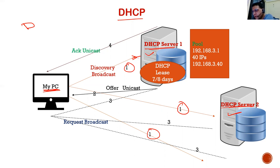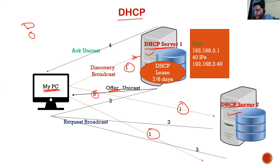The nearest server will respond with the second packet — this is the Offer. It is a unicast message coming directly from that server. It could also happen that I receive an offer from the second server as well. To avoid getting two IP addresses and creating a duplicate, the offer from Server 1 will include the IP address, subnet mask, default gateway, and DNS server — and it comes directly to me as a unicast message.